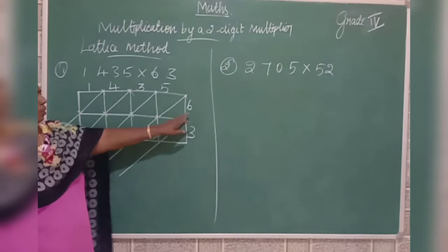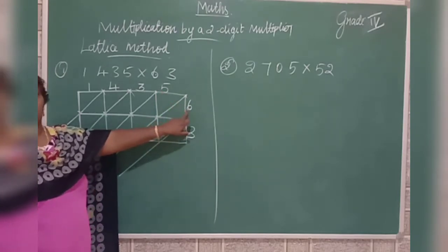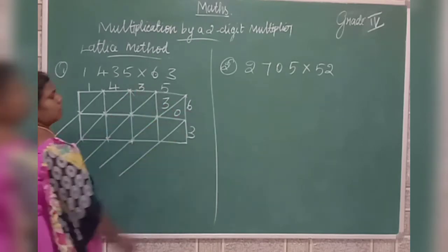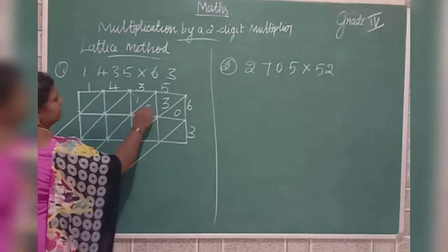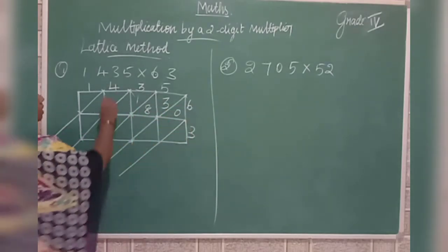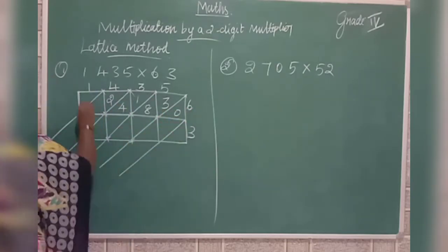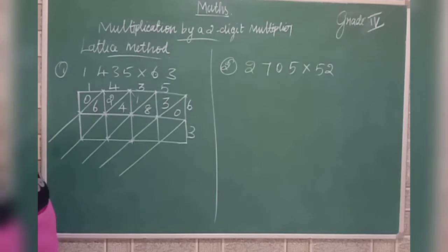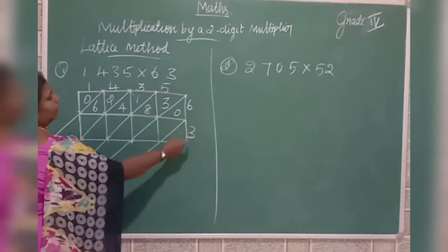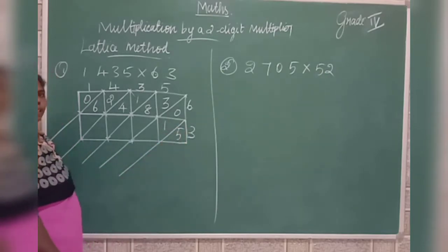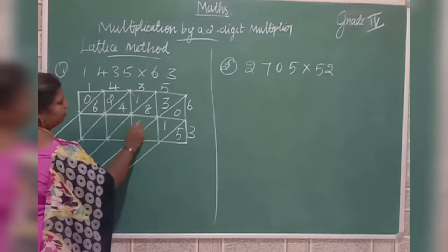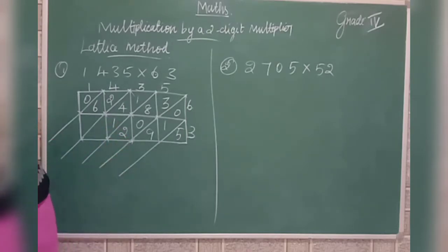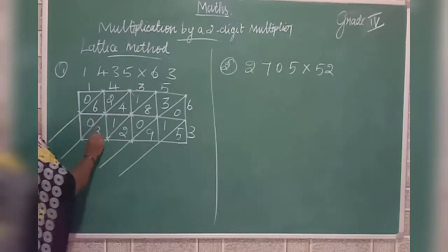Now we start. Multiply 5×6 is 30 — write 3 and 0. Then 3×6 is 18 — write 1 and 8. Then 4×6 is 24 — write 2 and 4. Then 1×6 is 6 — write 0 and 6. Next row: 5×3 is 15 — write 1 and 5. 3×3 is 9 — write 0 and 9. 4×3 is 12 — write 1 and 2. 1×3 is 3 — write 0 and 3.